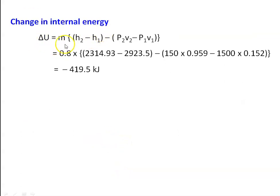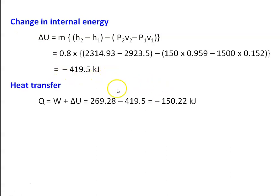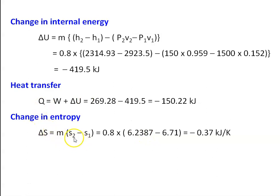Change in internal energy: delta U equal to M into H2 minus H1 minus P2V2 minus P1V1. Substituting: 0.8 into 2314.93 minus 2923.5 minus 150 into 0.959 minus 1500 into 0.152, calculating delta U equal to minus 419.5 kilojoules. Heat transfer Q equal to W plus delta U equals 269.28 minus 419.5 equal to minus 150.2 kilojoules, that is heat is rejected. Change in entropy delta S equal to M into S2 minus S1 equal to 0.8 into 6.2387 minus 6.71 equal to minus 0.37 kilojoules per kilogram Kelvin.